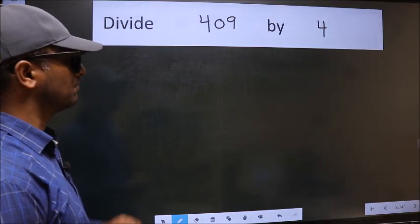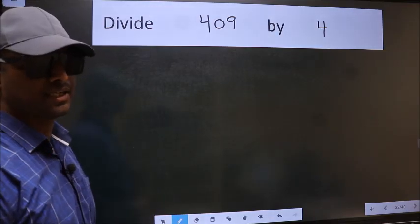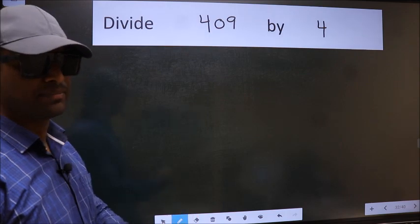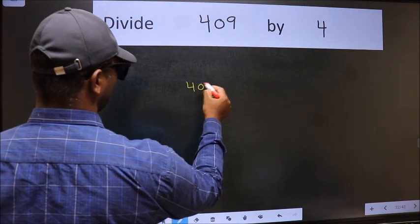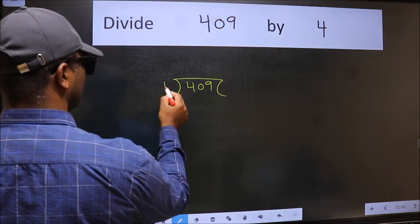Divide 409 by 4. To do this division, we should frame it in this way. 409 and 4 here.